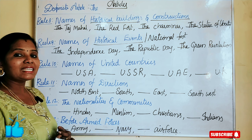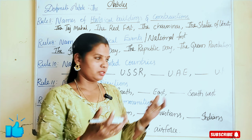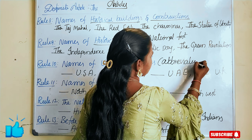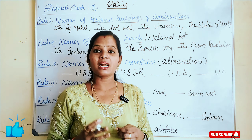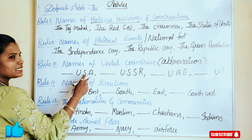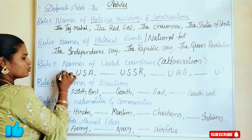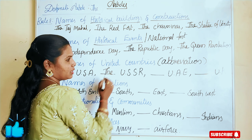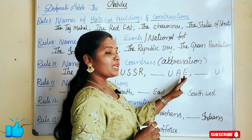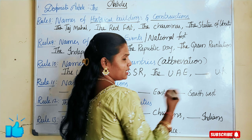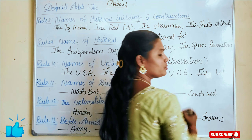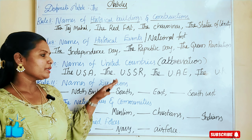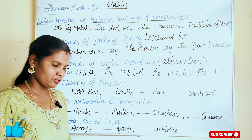The next rule is names of united countries when used as an abbreviation. When country names appear as abbreviations, we have to use the article 'the' before them. For example: the USA — United States of America — we have to use 'the' before it. And the US — United States of Soviet Russia — we have to use 'the'. And the UAE — United Arab Emirates — we have to use 'the'. And the UK — United Kingdom — we have to use the article before it. Moreover, they are united country names, so they carry a plural formula, and we have to use 'the' before them.